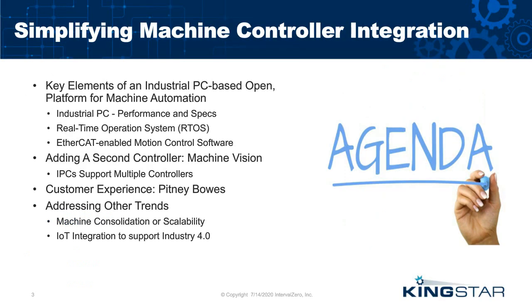For a quick agenda: we'll start with key elements of an industrial PC-based open platform. We'll add PC details, then a real-time OS, and then an EtherCAT-enabled motion software platform. We'll talk about adding a second controller specifically for machine vision, followed by a case study with Pitney Bowes. Then we'll address trends like machine consolidation for scalability and IoT integration to support Industry 4.0.